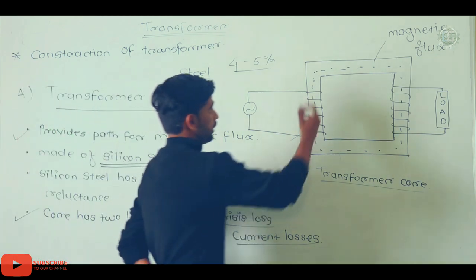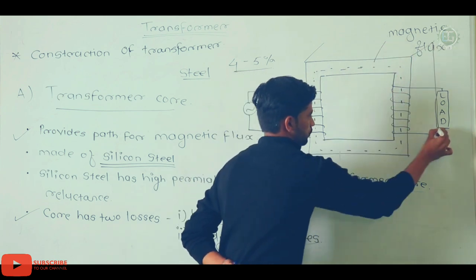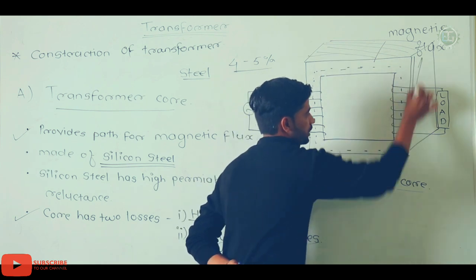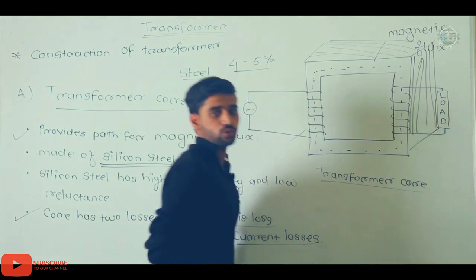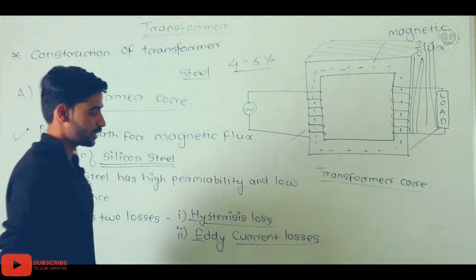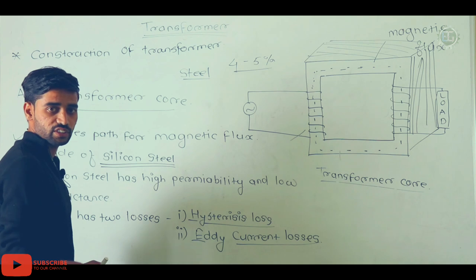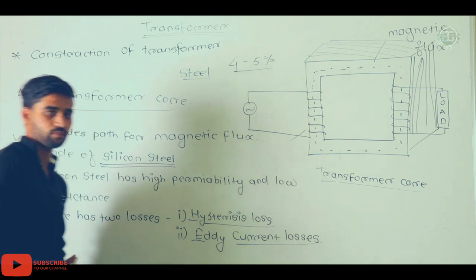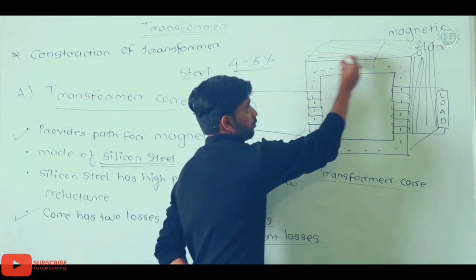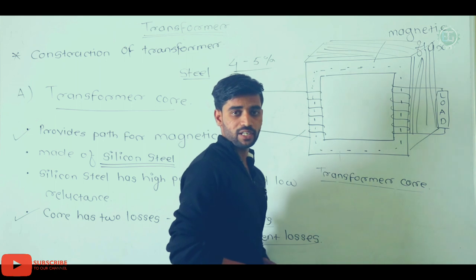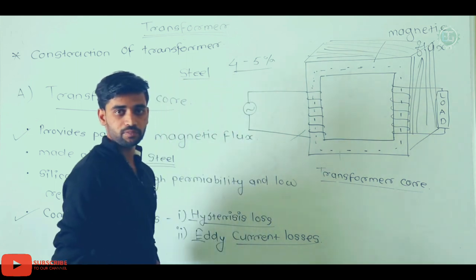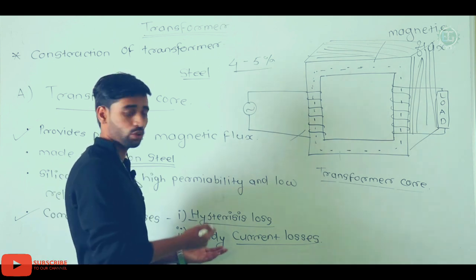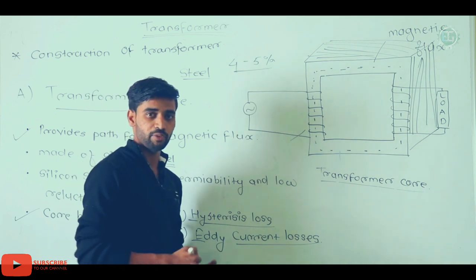The transformer core is made of thin sheets to reduce eddy current losses. The silicon steel core uses thin laminated sheets. These thin sheets are laminated using insulating materials such as impregnated paper, mica, red oxide, and inorganic paints, reducing conductivity between sheets and minimizing eddy current losses.